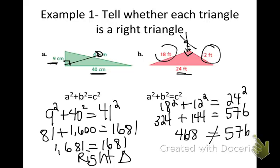Meaning this is not a right triangle. So you're using the Pythagorean theorem to see if a squared plus b squared does equal c squared. And if it does, you have a right triangle. And if it doesn't, you have no right triangle.